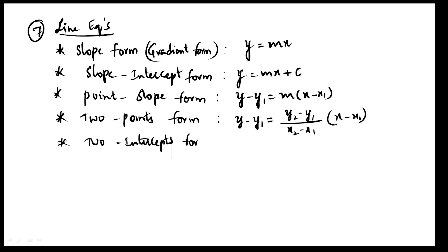Two intercept form: if x-intercept and y-intercept are given, the formula is x by a plus y by b equals 1, where a is the x-intercept and b is the y-intercept. So the forms covered are: two intercepts form, point slope form, and slope intercept form.